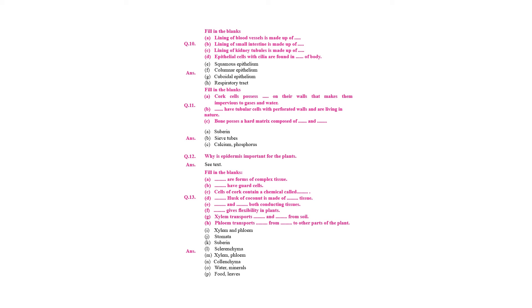Question 12: why is epidermis important for the plant? Epidermis protects the root, stem, and leaves. It is formed of a thick layer with cuticle and wax, preventing excess transpiration and invasion of parasites. Stomata have guard cells. Cells of cork contain a chemical called suberin.